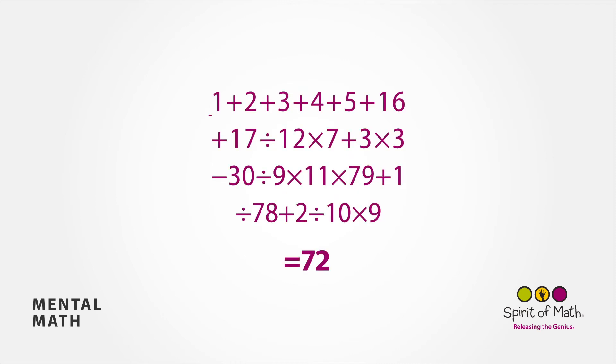Starting at the beginning of the equation, you have 1 plus 2 plus 3 plus 4 plus 5, which is the same as saying 6 times 5 divided by 2, which is 15. Adding 16 and adding 17, if you look back at that, if you had 15 plus 16 plus 17, that's the same as saying 16 plus 16 plus 16, or 16 times 3, which is 48.